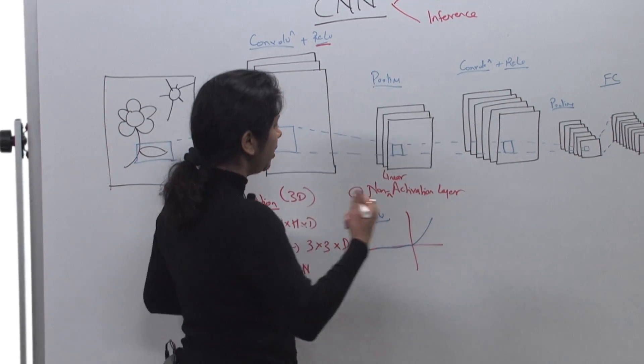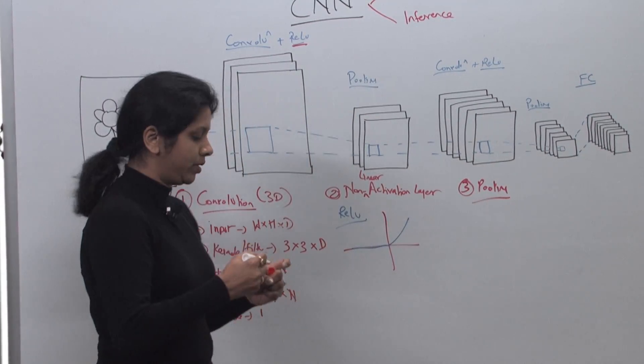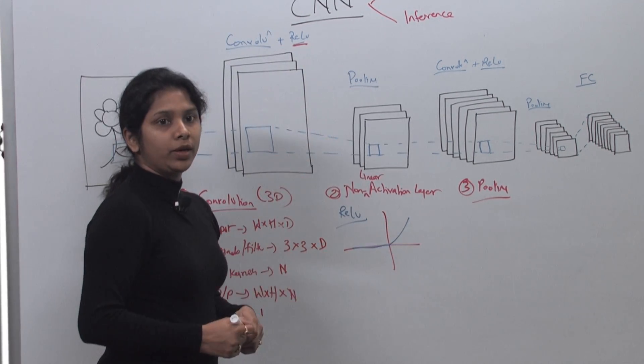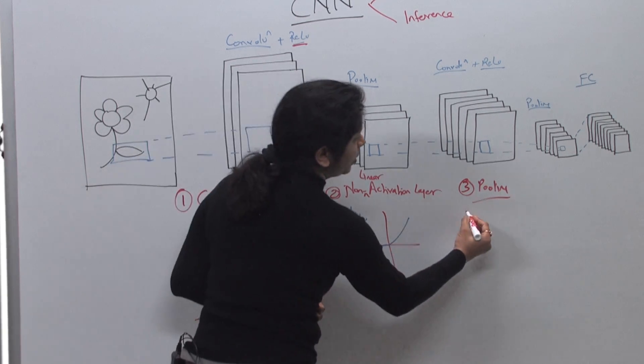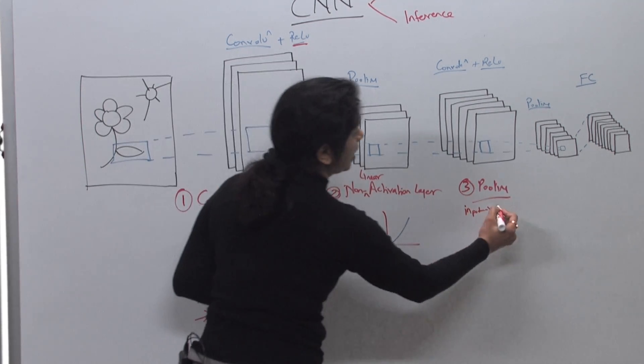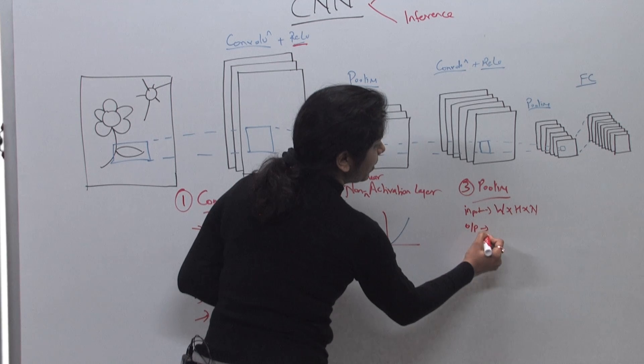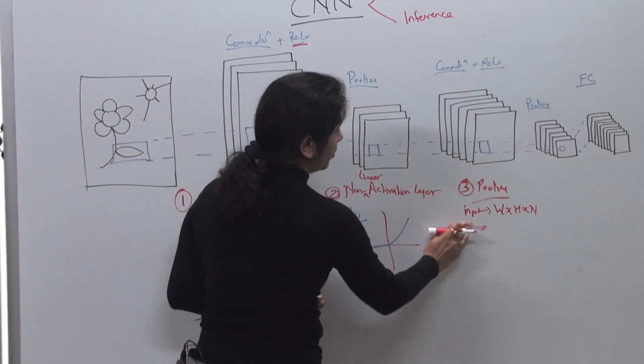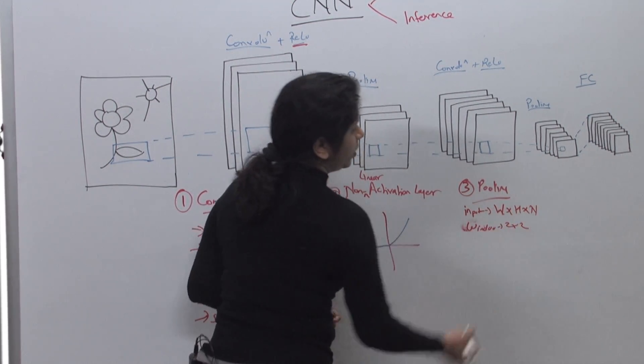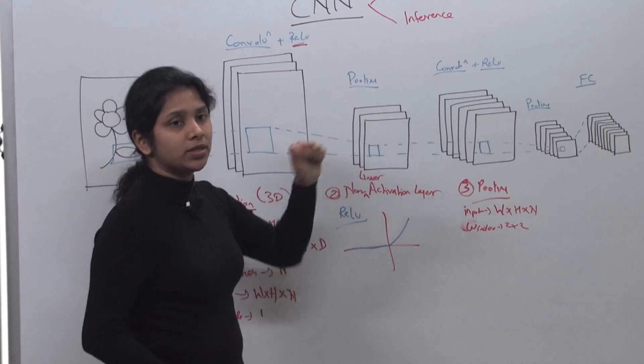The next layer is pooling. Pooling is another non-linear layer, but it's specifically used to downsample. As we can see in this diagram, we have gone half the size. So what I'm using is a pooling of two by two. Pooling will get input from the previous layer, so it is having this W by H by N as the input, and then output will depend on the window size. If I have my window size as two by two, then it's going to take every two by two window in my convolution layer and minimize it to one pixel.